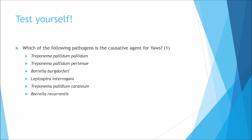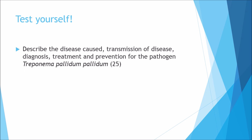Now for the test yourself section. Multiple choice question: which of the following pathogens is the causative agent for Yaws? Options are: Treponema pallidum pallidum, Treponema pallidum pertenue, Borrelia burgdorferi, Leptospira interrogans, Treponema pallidum carateum, or Borrelia recurrentis? There is also an essay-style question: describe the disease caused, transmission, diagnosis, treatment and prevention for Treponema pallidum pallidum — and note you can substitute any bacterium for good essay practice. I have a video on my channel about how to approach essay-style questions which will seriously help.